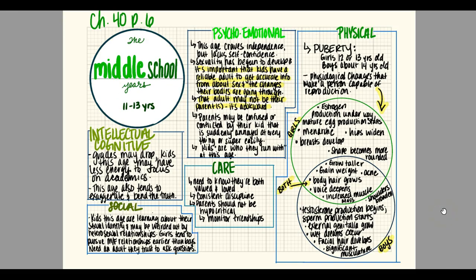The middle school years are ages eleven to thirteen. For intellectual/cognitive development, grades may start to drop a little and kids may have less energy to focus on academics. This age also tends to exaggerate and bend the truth. For social development, kids are learning about their sexual identity and may be a bit weirded out by heterosexual relationships — girls may think boys are gross and vice versa. Girls tend to pursue male and female relationships earlier than boys do generally.